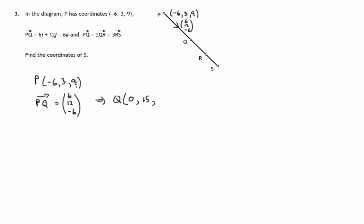And if we were at 9 units along the z-axis and we go down 6, we're at a height of 3. So Q we've reached and we've now got the point (0, 15, 3).